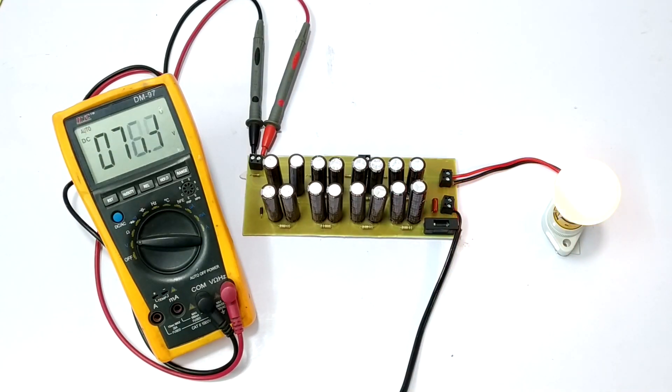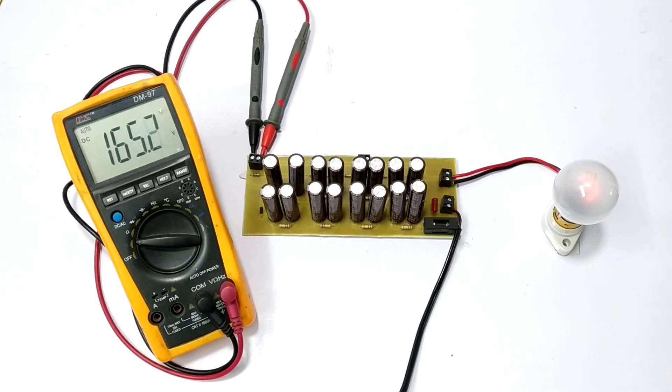As you can see, the voltage is gradually increasing and the intensity of bulb goes on decreasing. It's all because the capacitors are charging.